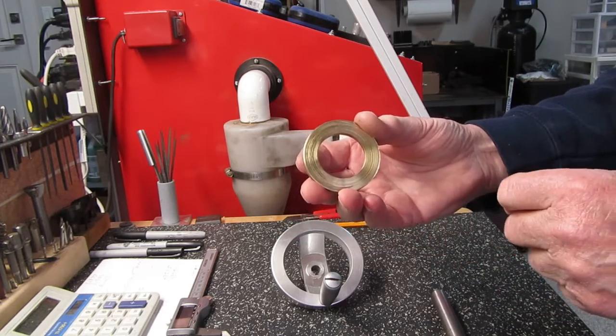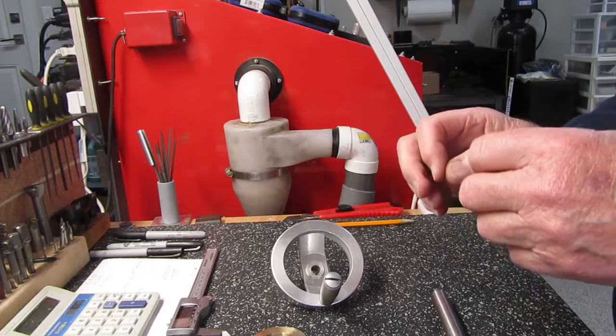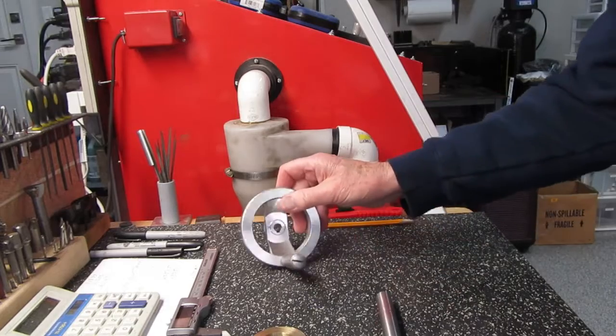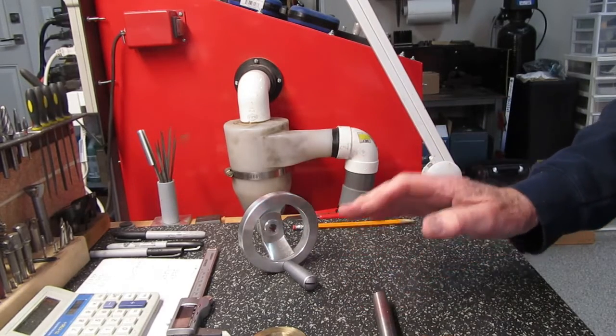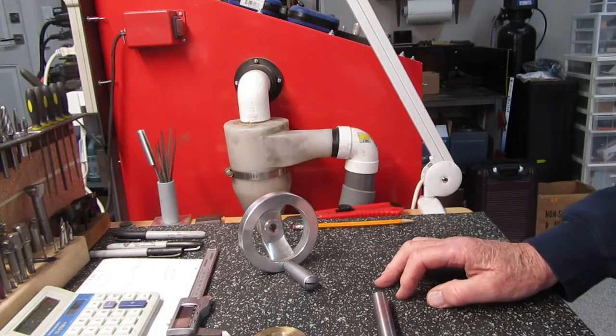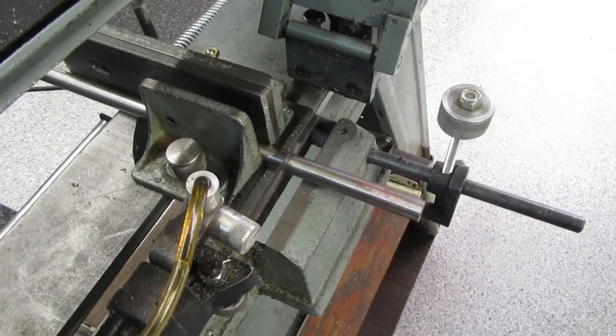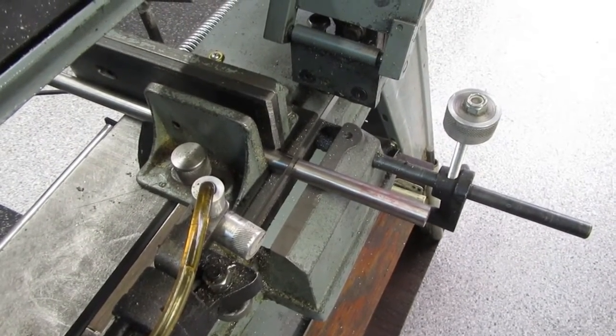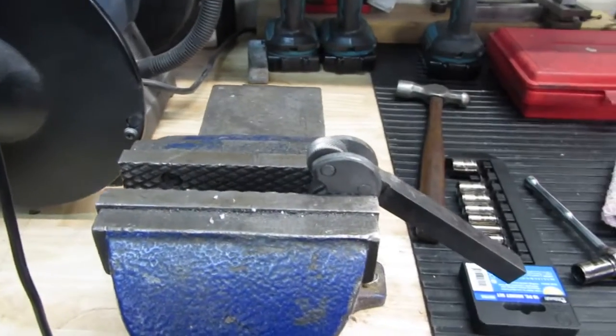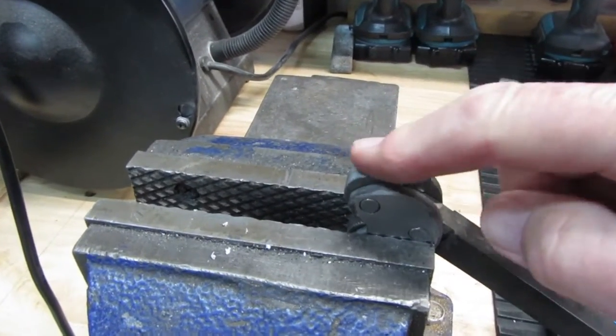In order to produce that, I'm going to use one knurling wheel and a piece of 5/8 water hardening drill rod because it's going to need to be fairly rigid to withstand the pressure that we're going to put onto it. I'm going to borrow one of these knurling wheels from this old knurling tool by just knocking out the pin.